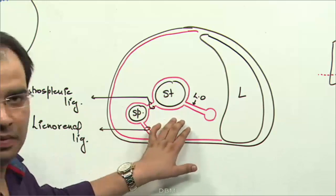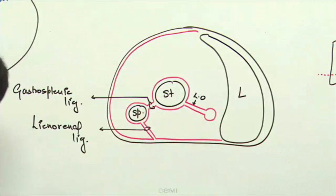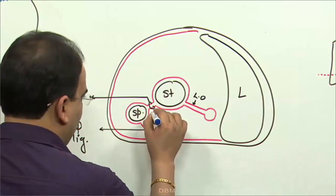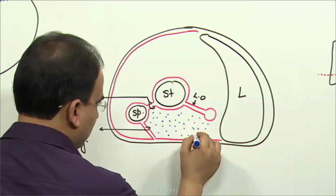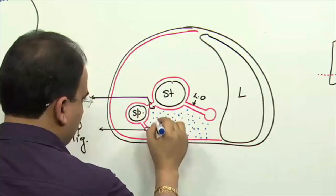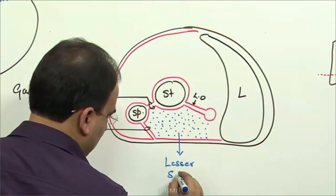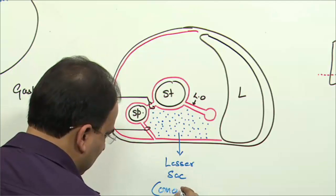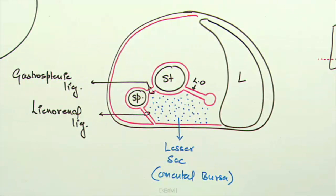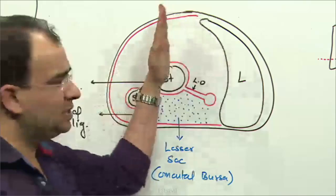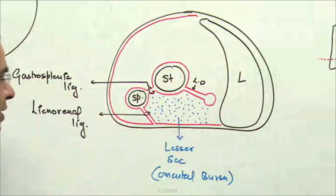Whatever space you appreciate behind the stomach and lesser omentum — whatever is trapped in here — this is the lesser sac. The lesser sac is also called the omental bursa. It lies behind the stomach and the lesser omentum. The stomach was straight at first, and when it rotated, the right space became trapped behind the lesser omentum and stomach, forming the lesser sac.